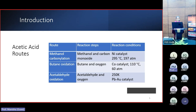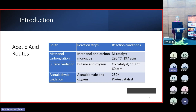If you consider the methanol carbonylation process, the chemicals involved are methanol and carbon monoxide. Similarly, if you consider other routes, butane oxidation uses butane and oxygen. So you can see that different routes involve different chemicals and also different reaction conditions.